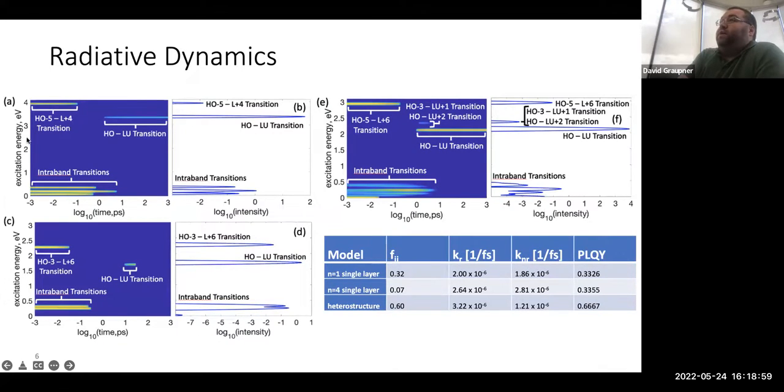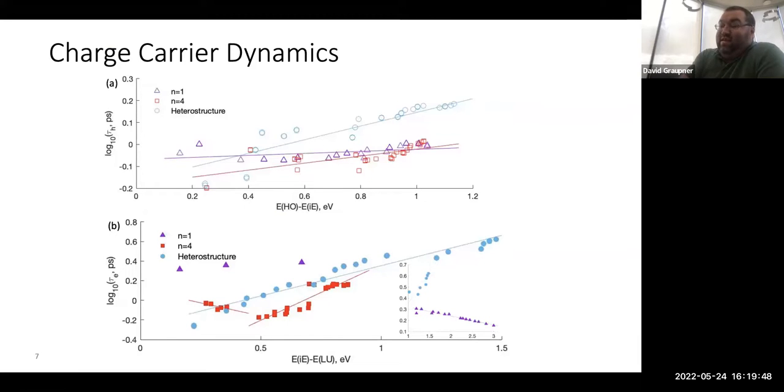Here we see the radiative dynamics. The blue figures are time-resolved and the graphs next to them are time-integrated. I realize now that I need to label these yet. We see that the single layer, which are the ones on the left, if we look at the HOMO-LUMO transition in the time-integrated, we see that the heterostructure HOMO-LUMO transition is two orders of magnitude more intense than the single-layer models. Our table here shows the photoluminescence quantum yield of these models, and we see that the heterostructure has approximately doubled the quantum yield of the single-layer models.